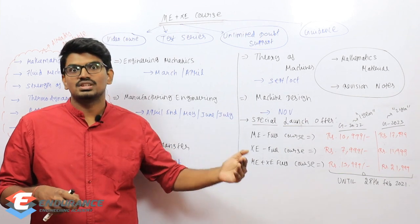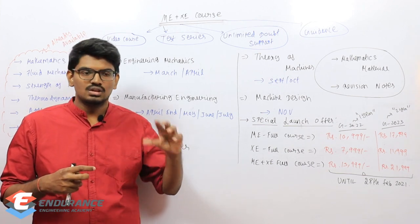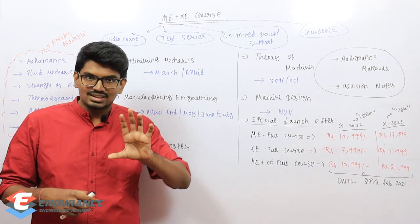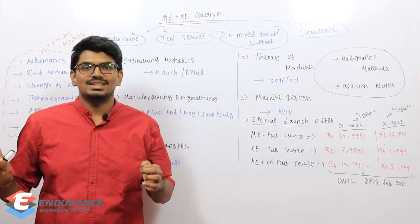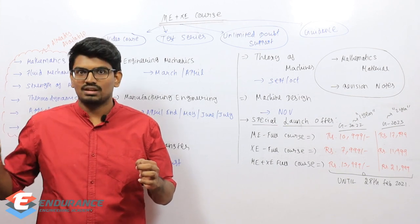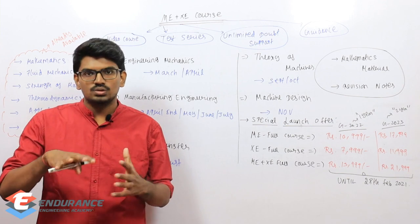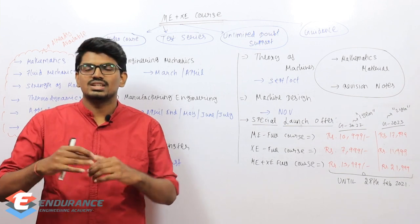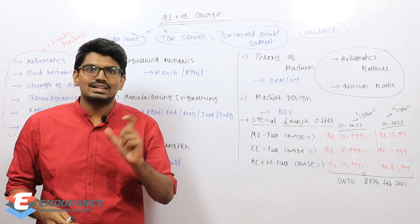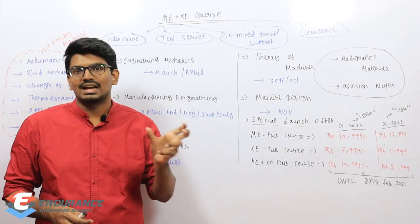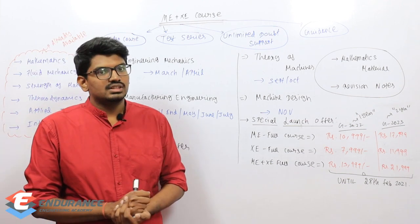The second option is subject-wise Telegram groups. Whether you register for a subject-wise course or the full course, you will be added to subject-specific groups. These are private groups for registered students only, so there won't be any spam. Rules for posting in the group — such as adding tags like 'linear algebra' and specifying the source of the question — will be provided after registration.